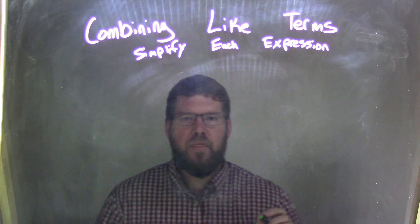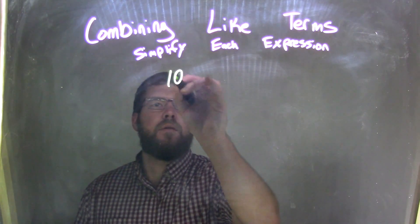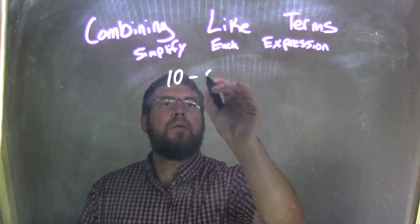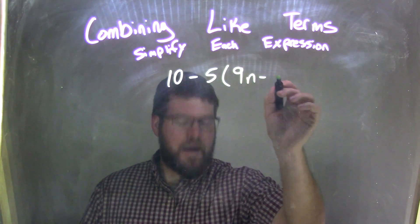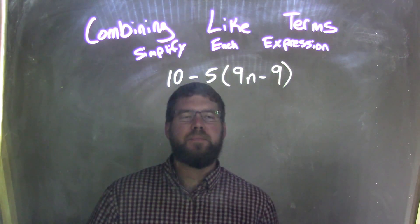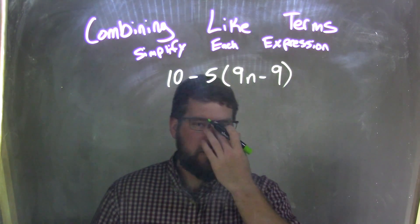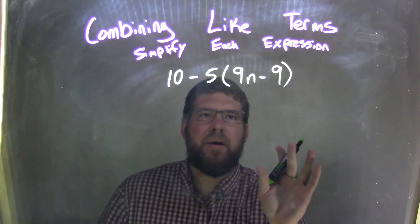So, if I was given this expression, 10 minus 5 times 9n minus 9, okay? When I look inside the parentheses first, no like terms can combine, okay?